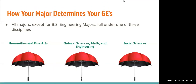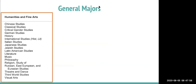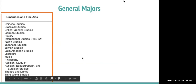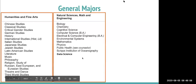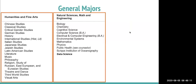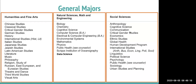Engineering majors will take GEs in the humanities and fine arts as well as social sciences — the two disciplines not represented by their major. We will talk about the specific GEs later in this presentation. Typical majors in each discipline include literature, philosophy, and music for humanities and fine arts; biology, chemistry, physics, or data science for natural sciences; and psychology, anthropology, sociology, economics, and international studies for social sciences.